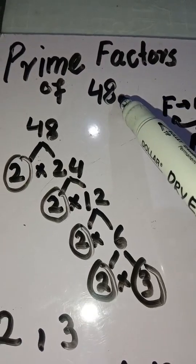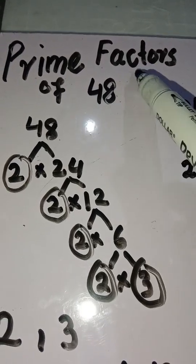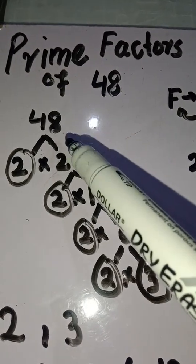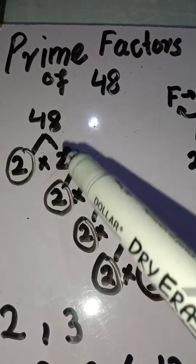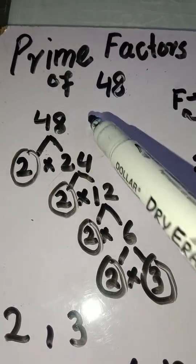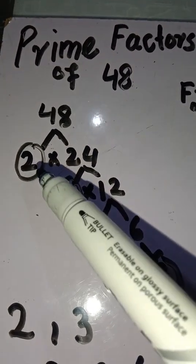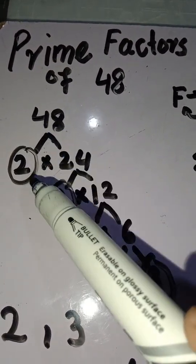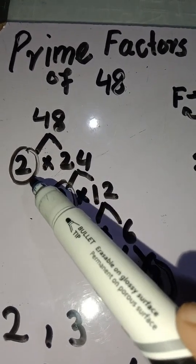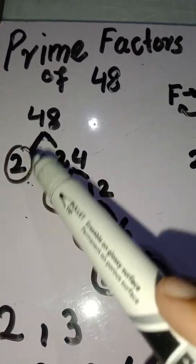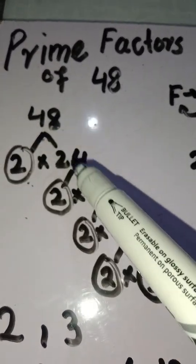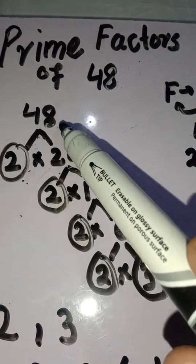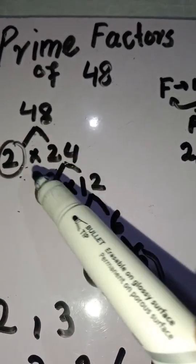Find the prime factors of 48 and the factors of 48. We are using the factor tree method — dividing 48 by the smallest prime number. 2 is the smallest prime number which divides 48. Starting with 2 times 24 gives 48, so 2 is a prime factor.